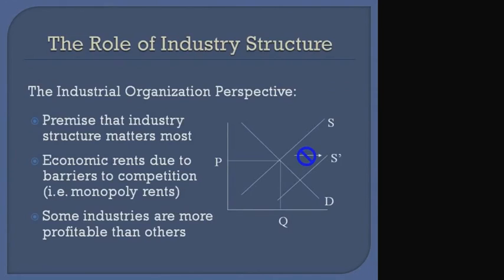When we talk about the industrial organization perspective, coming out of economics, the perspective suggests that there are various barriers to entry that prevent a shifting out of the supply curve and a lowering of prices. The premise here is that industry structures matter most — that there are some barriers to competition that allow for these monopoly rents we talk about, and ultimately that some industries are simply more profitable than others.